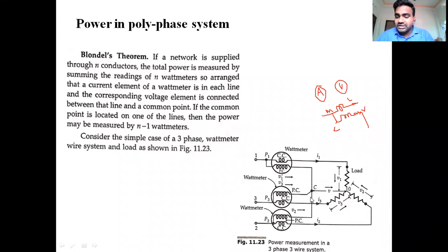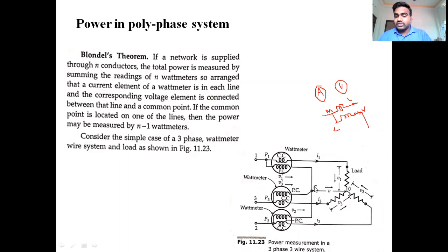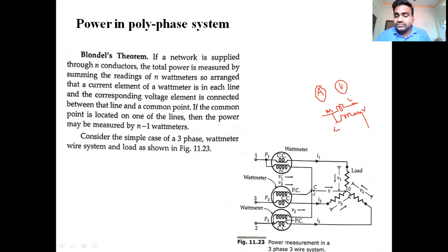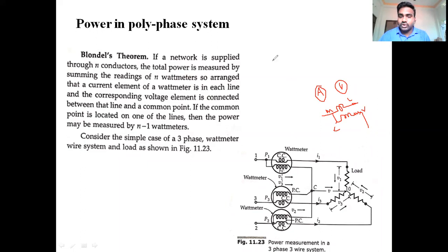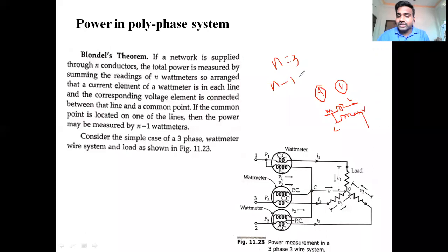In this figure, the common point is away from the line — not connected on I1, I2, or I3. If this common point is connected on one of the lines, the power is measured with N minus 1 wattmeters. For example, if connected at line 3, N minus 1 equals 3 minus 1 equals 2 wattmeters.